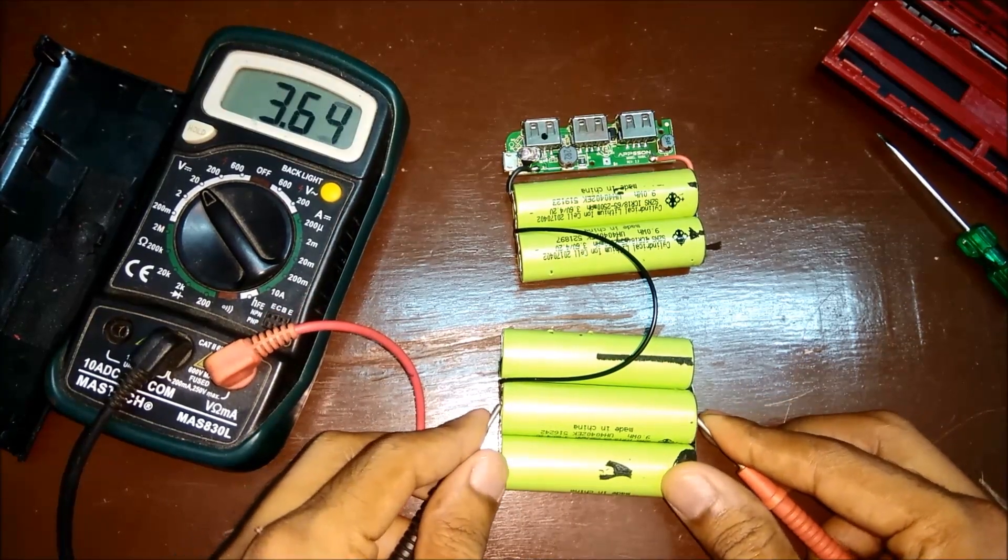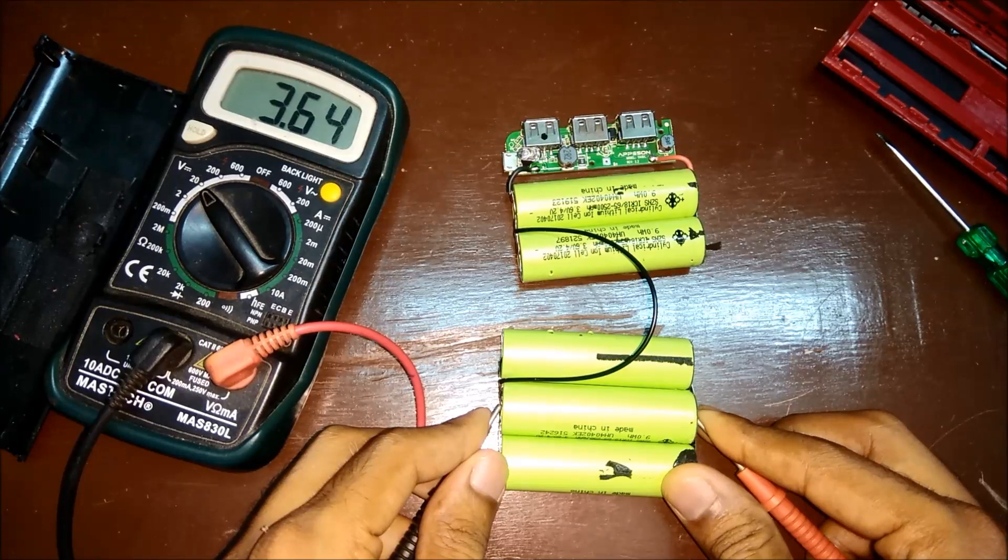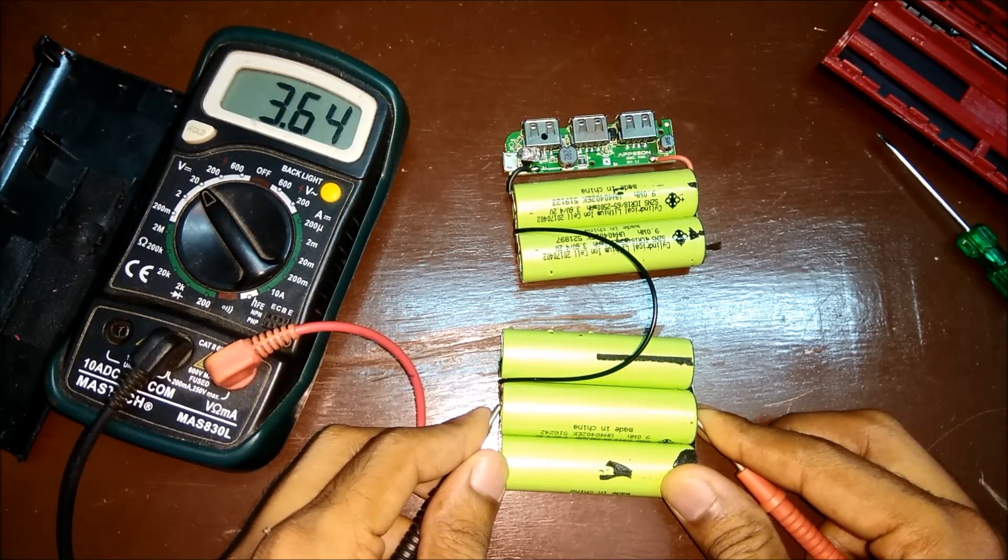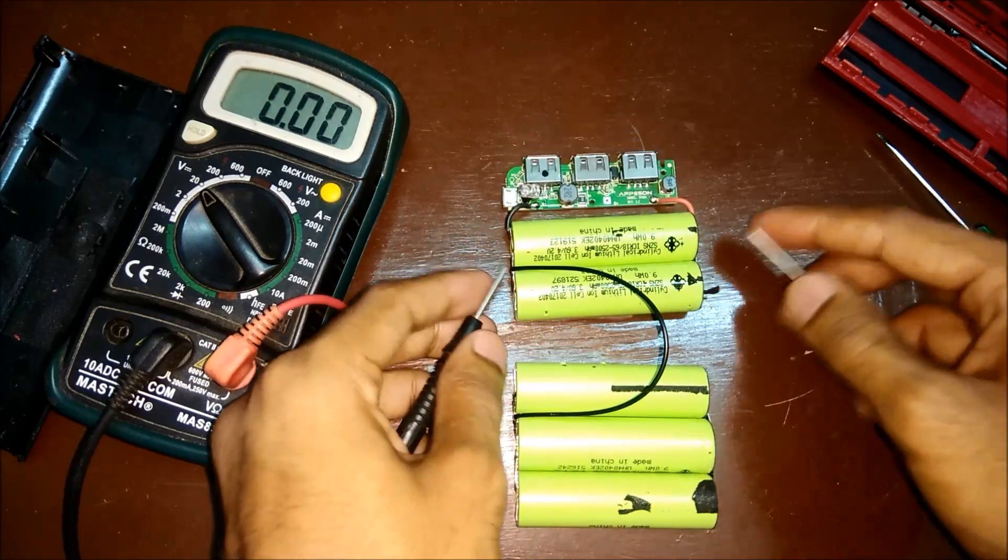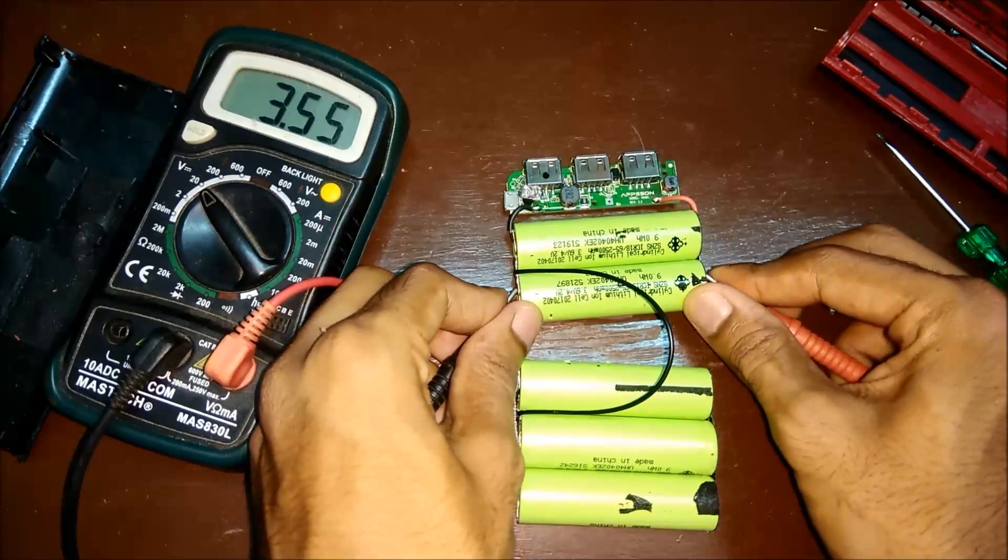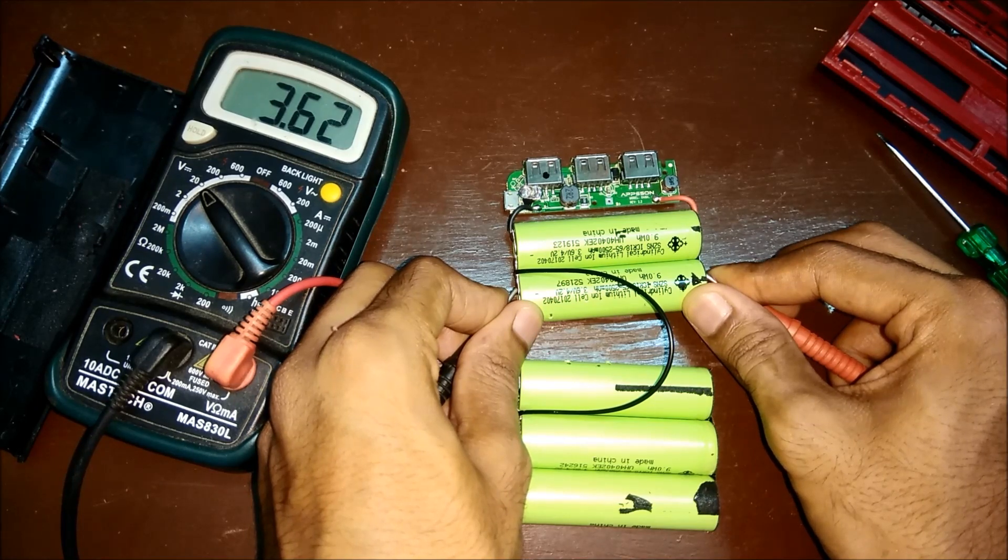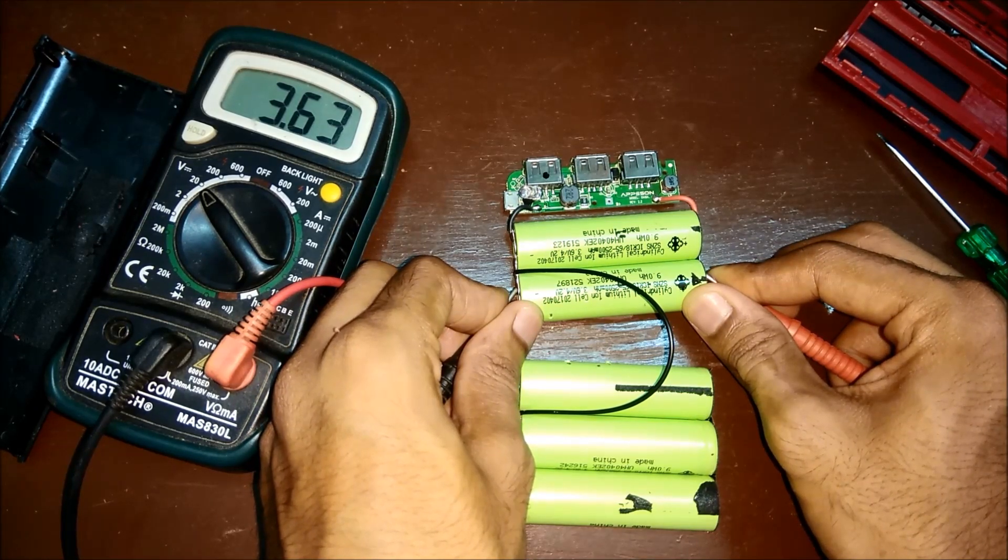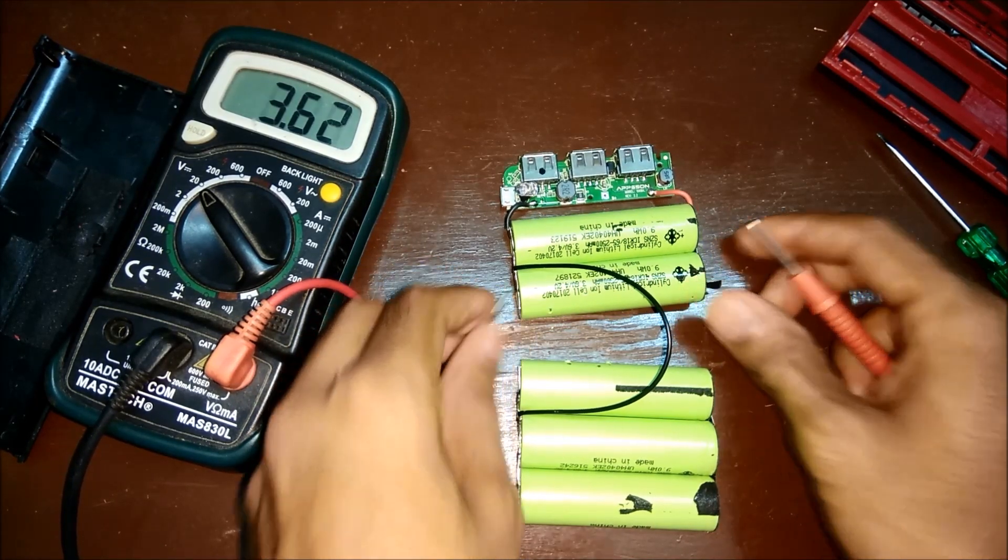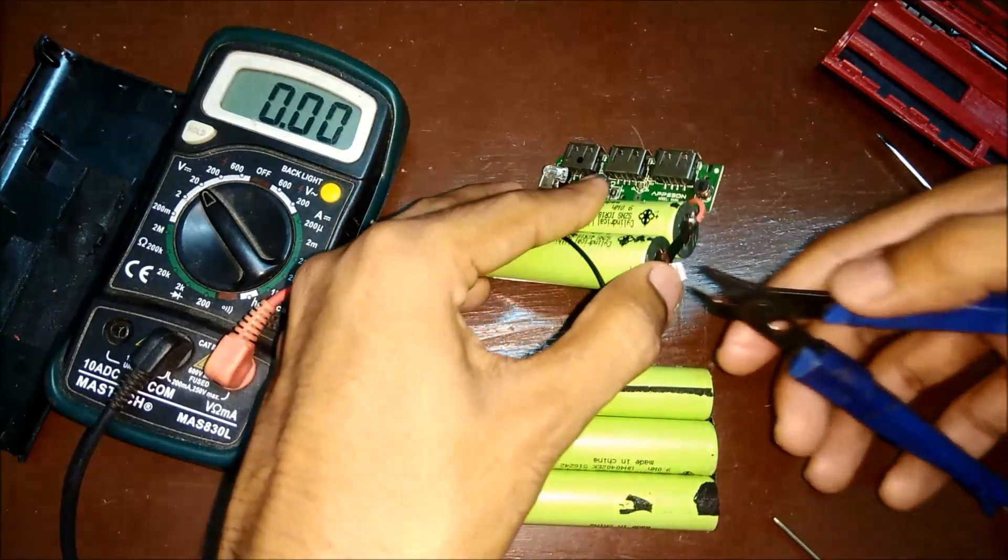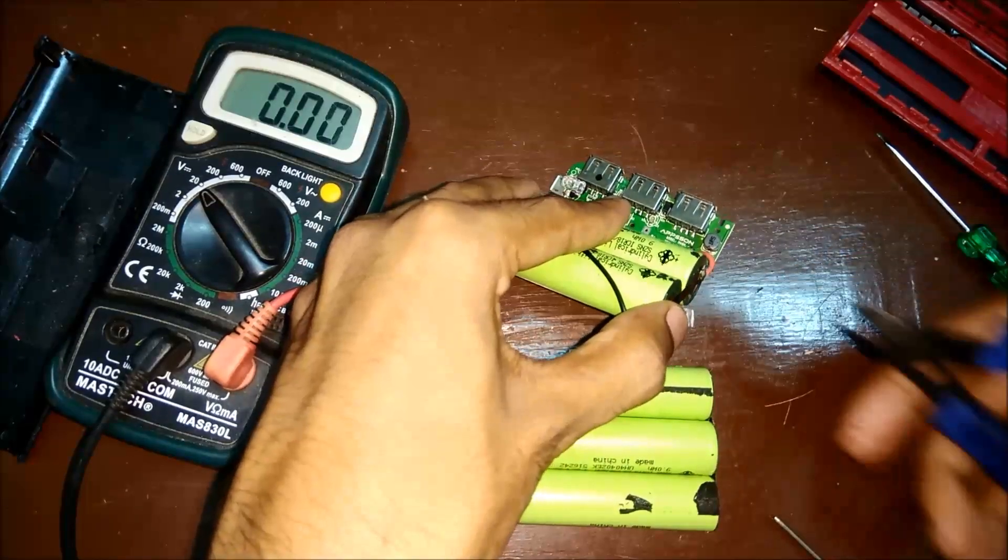It's been one hour and let's test the voltage. This one is 3.64 volts and I think it hasn't dropped anything. Now let's test this one. So this is showing 3.62. So that means the voltage has dropped in these two batteries. So now what we'll do is we'll separate these two batteries.